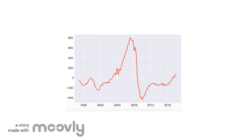Now that we have a suspicion this may be a spurious regression, we can check the residuals to see if they are non-stationary. The plot shows the residuals, and on first glance they don't appear to be stationary. The Dickey-Fuller test returns a statistic of minus 3.23 and a p-value of 0.08, meaning we cannot reject the null hypothesis of a unit root at 1% or 5%.